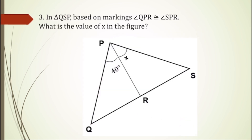For our third example, in triangle QSP, based on the markings, angle QPR is congruent to angle SPR. What is the value of X in the figure? The answer is 40 degrees.